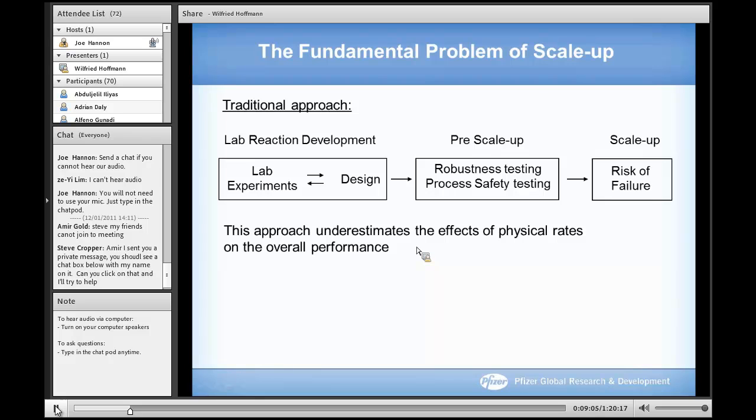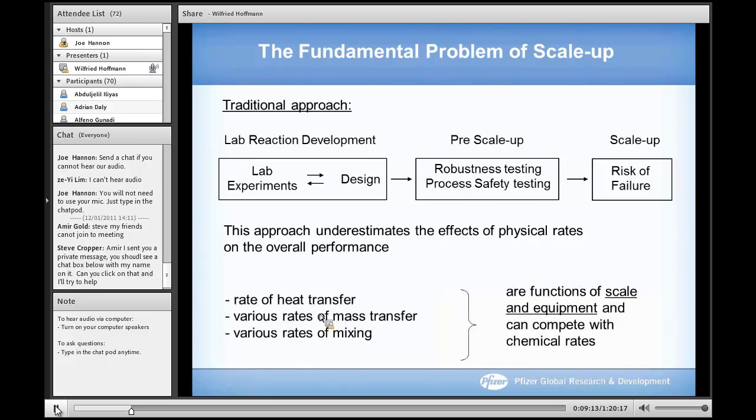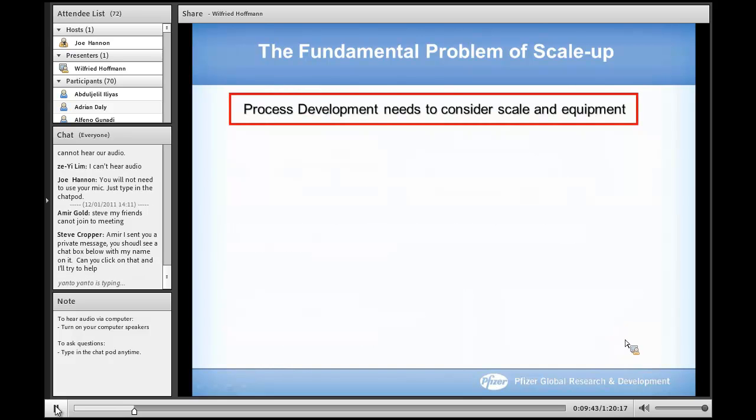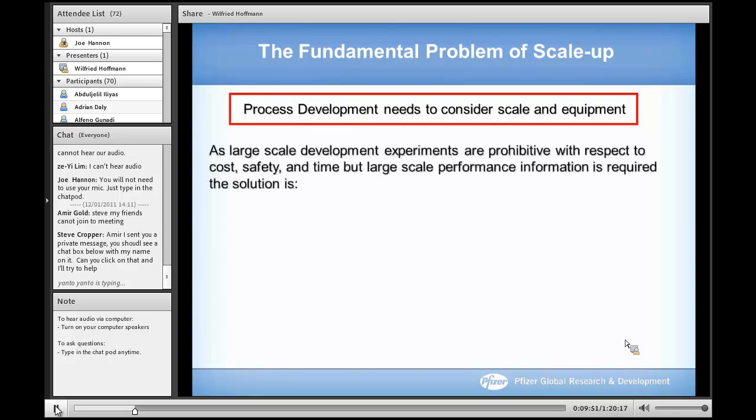The problem is that this approach underestimates the effects of physical rates on the overall performance. Physical rates are part of process development: we have rate of heat transfer, various rates of mass transfer (solid-liquid, liquid-liquid, gas-liquid), and rates of mixing which become important when the chemistry is fast and approaches the time scale of mixing. The fundamental problem is that all these physical rates are a function of scale and equipment. That is the dilemma. Process development needs to consider scale and equipment, but we cannot do trial and error experiments on large-scale equipment to find out a good process. However, we need the information. So what to do? The answer is process modeling.